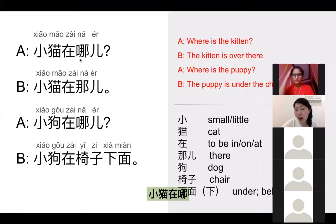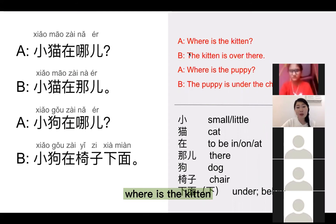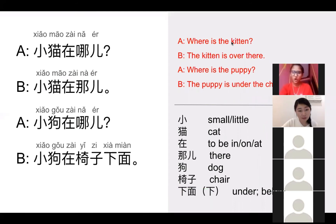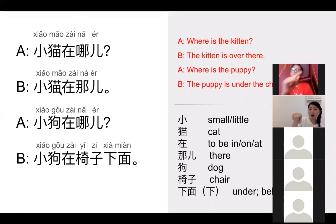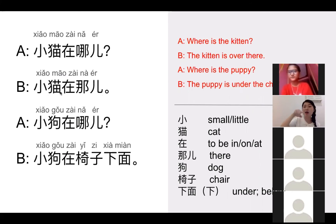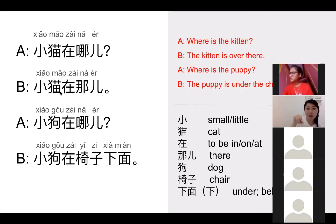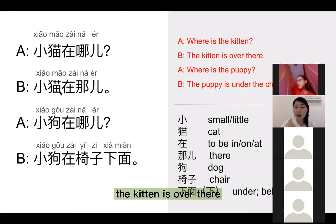小猫在哪儿?Where is the kitten? 小猫在那儿,那儿。这儿,那儿,这儿,那儿。小猫在那儿。The kitten is over there.